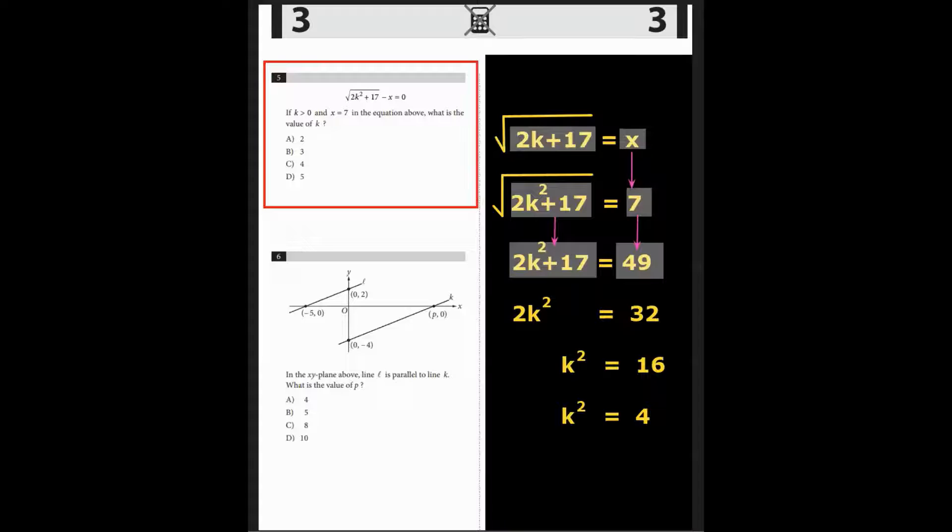Well, isolating the radical first, we'll add x to both sides. And then we have the square root of 2k squared plus 17 equals x. Then plugging in 7 for x, we'll then square both sides and we get what's underneath, 2k squared plus 17 equals 49. Subtract 17 from both sides, then divide both sides by 2, and we have k squared equals 16. Take the square root and k equals 4. The correct answer was C for question 5.